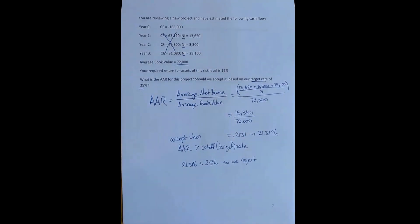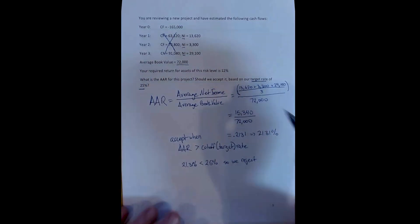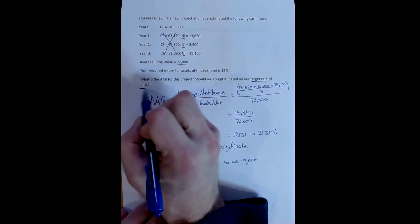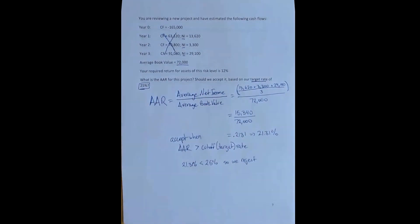Now, this has one of the same problems that the payback and discounted payback rule have, which is that this target rate is, for the most part, arbitrarily chosen. Now, it is not quite as bad as the discounted and normal payback rule, because this does not have to be completely arbitrary.